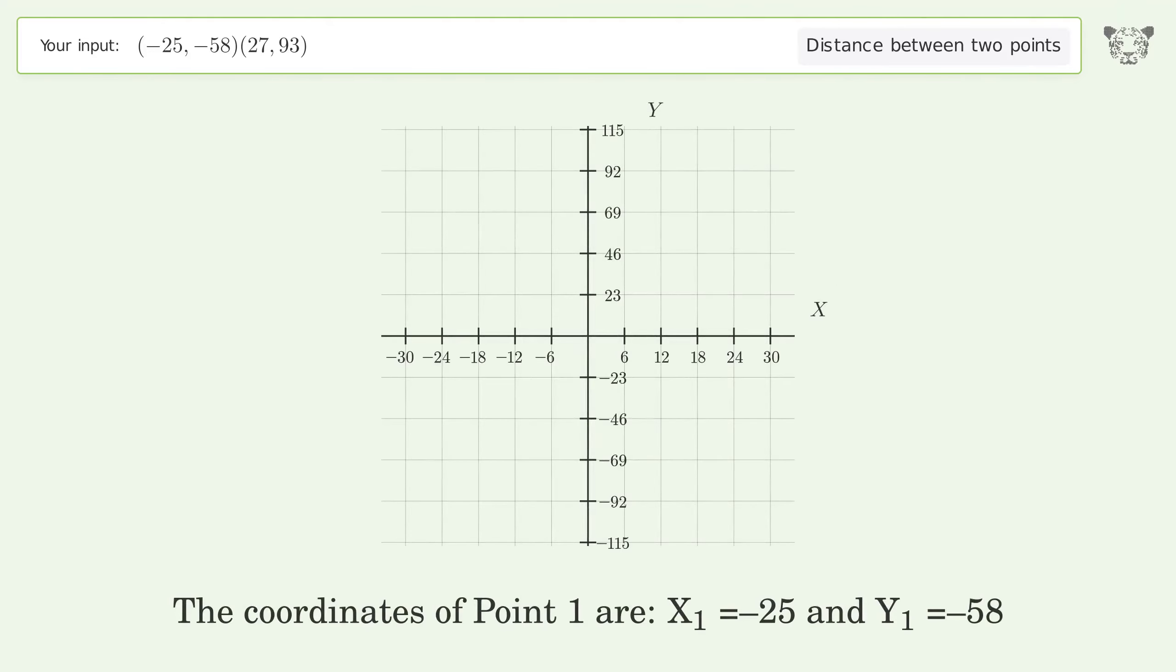The coordinates of Point 1 are x1 equals negative 25 and y1 equals negative 58. The coordinates of Point 2 are x2 equals 27 and y2 equals 93.